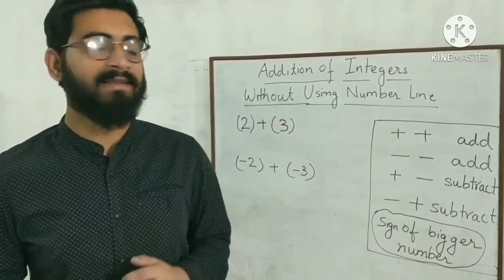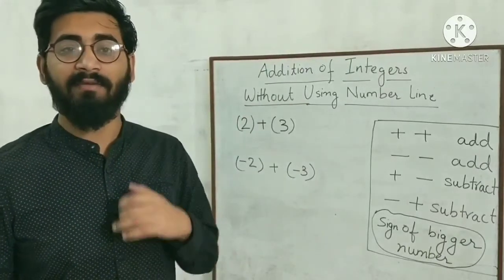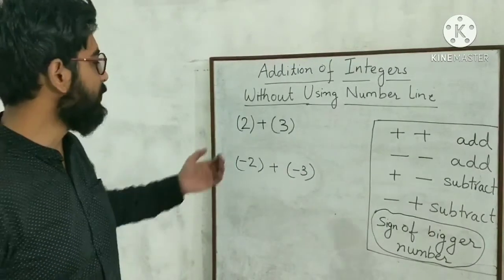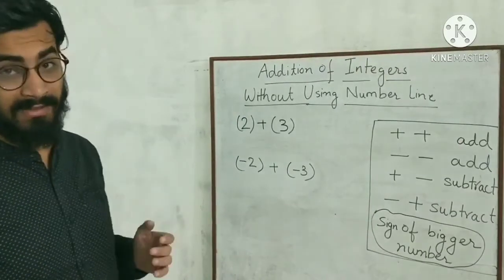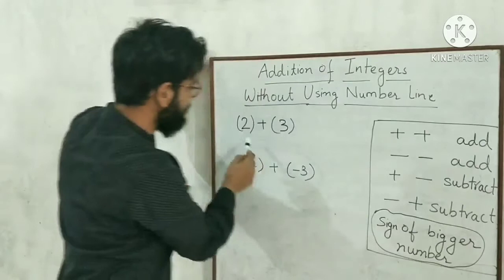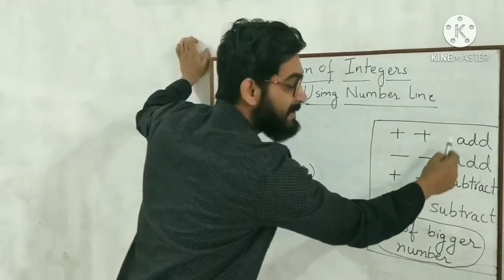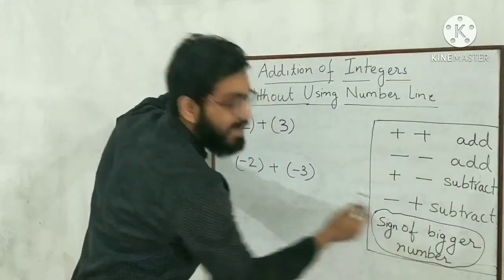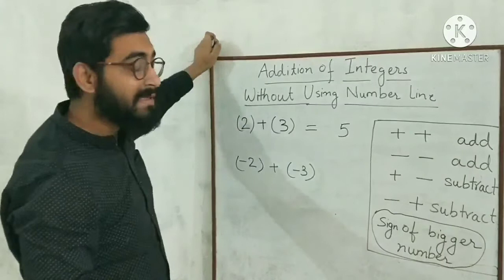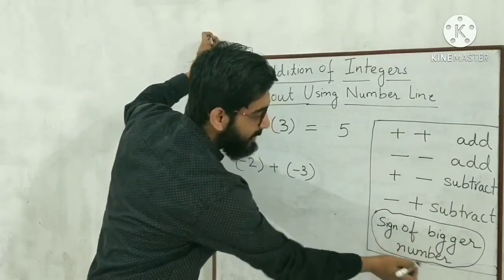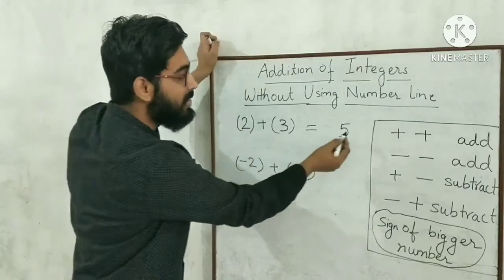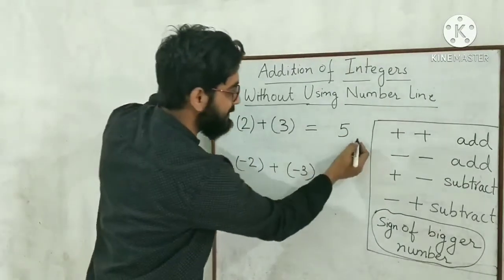Now let us learn addition of integers without using the number line. If you want to add 2 and 3: if both numbers are positive, simply add them and put the sign of the bigger number. 2 plus 3 equals 5. The bigger number is 3 which is positive, so the answer is positive 5.